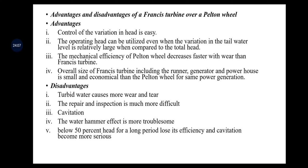Finally, below 50 percent of rated head — for example, if a Francis turbine works at 50 meters head and head drops to 25 meters — running it for a longer duration results in cavitation, which is a serious problem. This is not the case for the Pelton wheel: at lower head the work done is less, but the cavitation problem is absent.